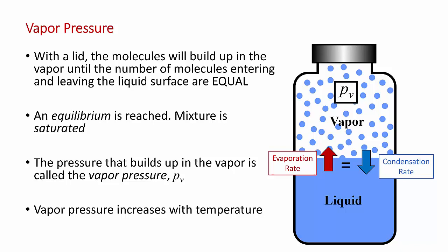Eventually you reach an equilibrium. Hopefully you've heard this concept before, likely in your chemistry courses. If you've taken a thermodynamics course, that's what we mean by a saturated mixture. The liquid and gas phases are in equilibrium. At equilibrium, the pressure builds up in the vapor space and it's the equilibrium pressure in this space that we call vapor pressure.